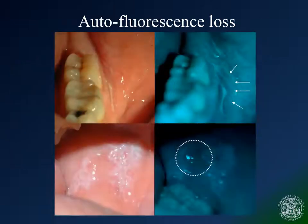Fluorescence loss extended beyond the margins which were visible to the naked eye. Here follow other examples of loss of fluorescence in two patients showing a dysplastic oral mucosa.